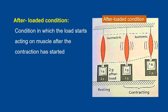Afterloaded condition is the condition in which the load starts acting on muscle after the contraction has started. As you can see in the image, there is a muscle shown and a weight of 1 gram is hanged on a muscle having another 2 gram weight resting on a platform. So when muscle contracts, this 3 gram weight acts on muscle. The condition in which the load of 3 grams starts acting on muscle after the contraction has started is called afterloaded condition.